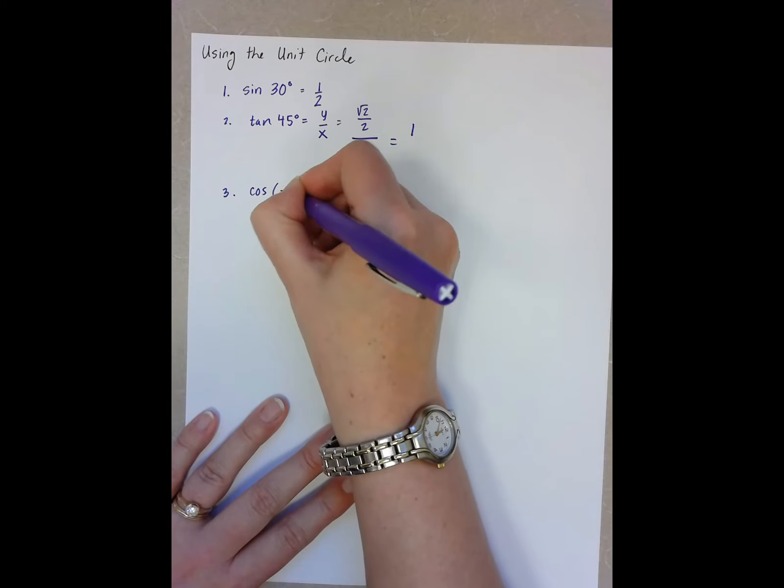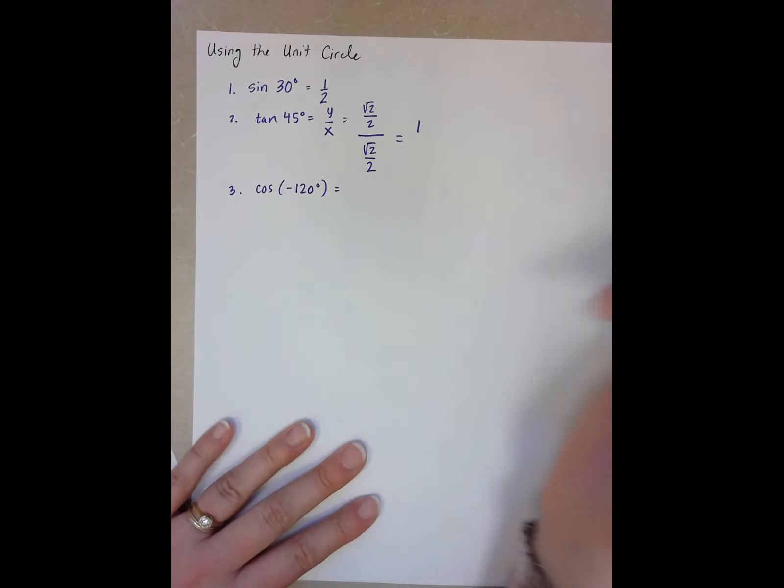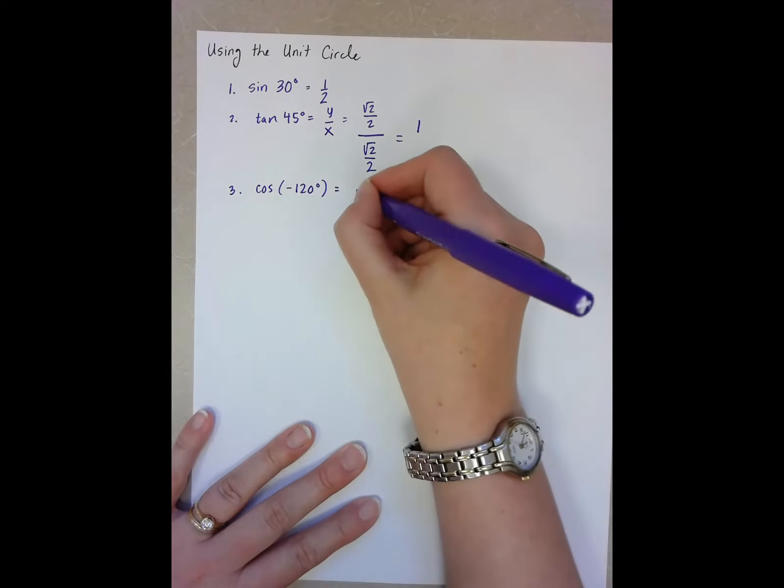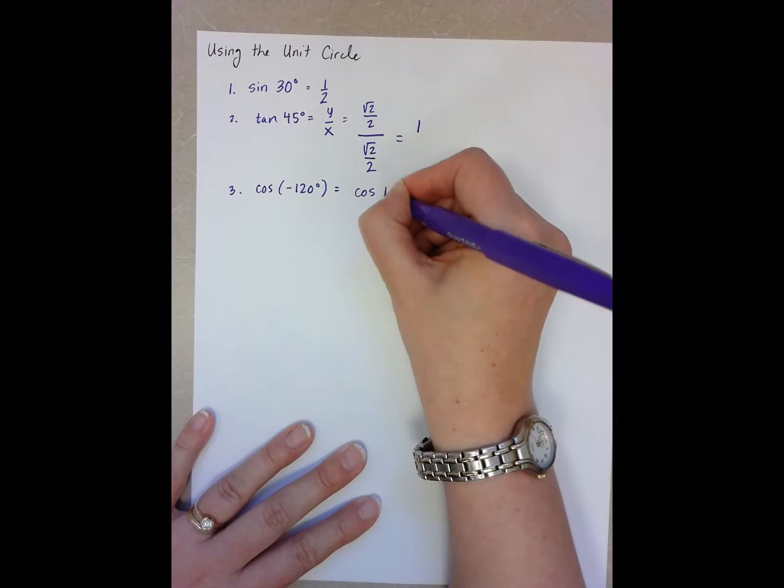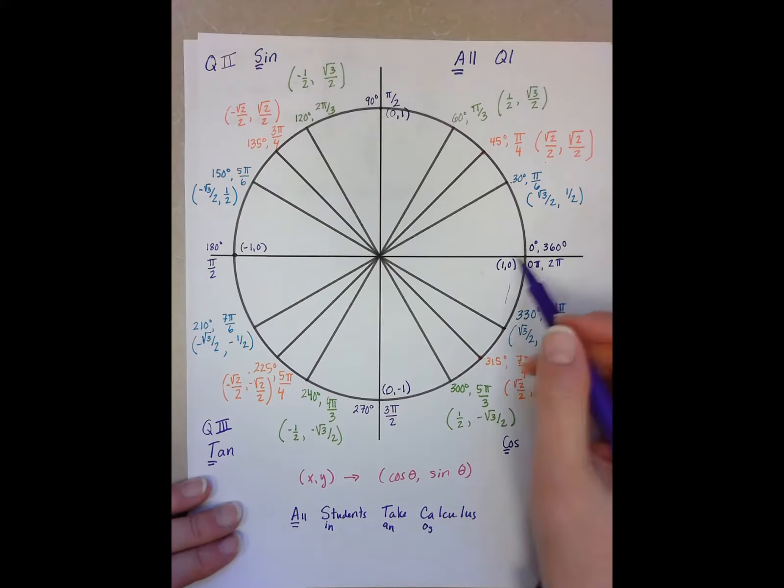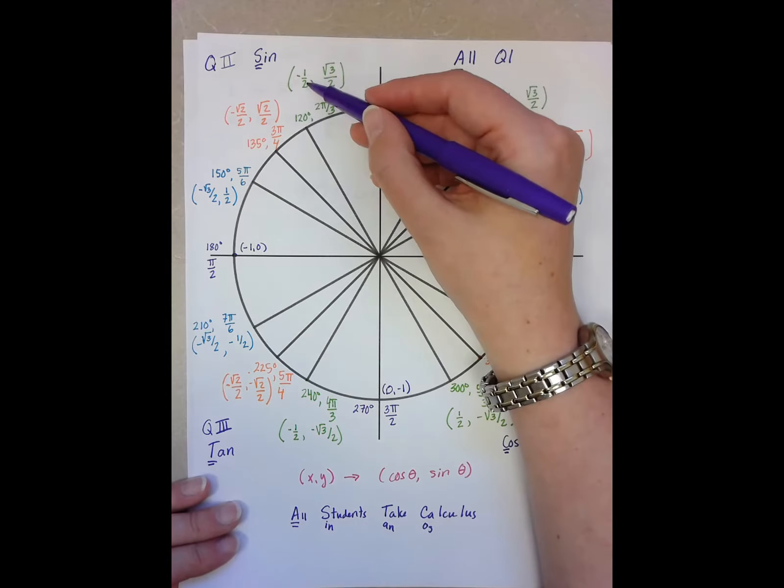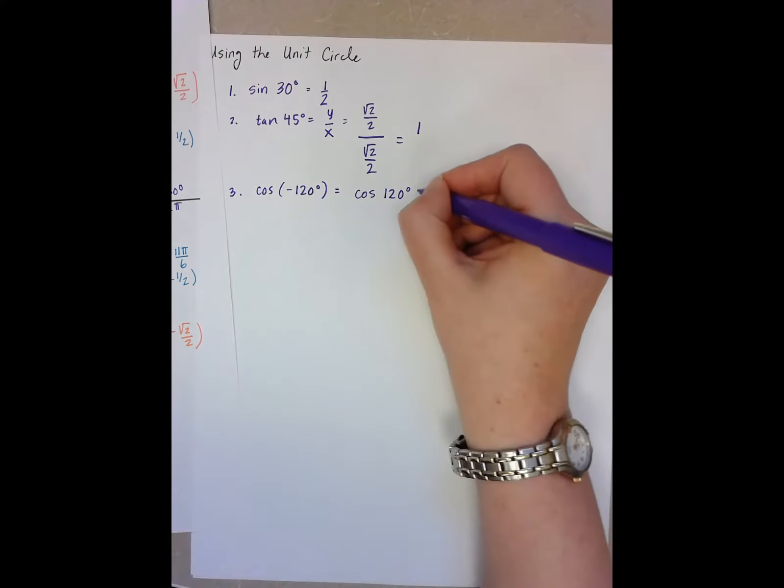Cosine of negative 120. Well, the first thing is that we know that the cosine of a negative angle actually turns out to be the cosine of that angle if it's positive. And so now again, I can look at my unit circle, and I can go to 120 degrees. Cosine is the x, and so the x is negative one-half.